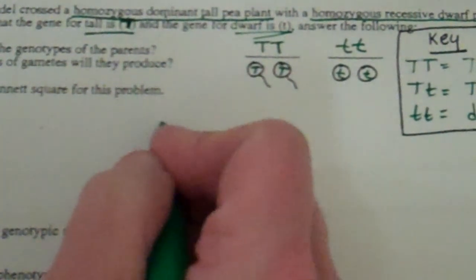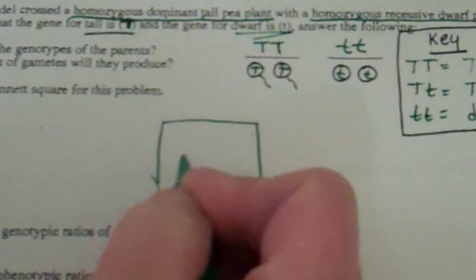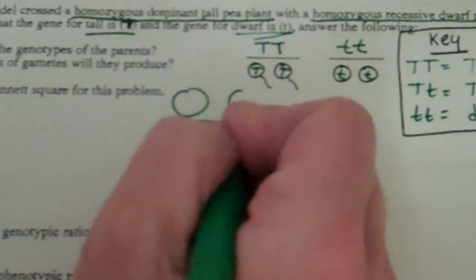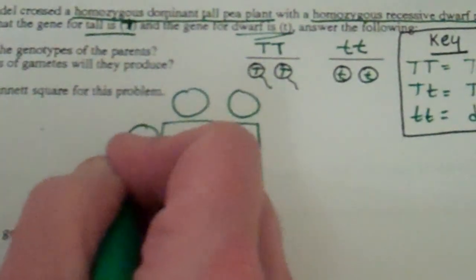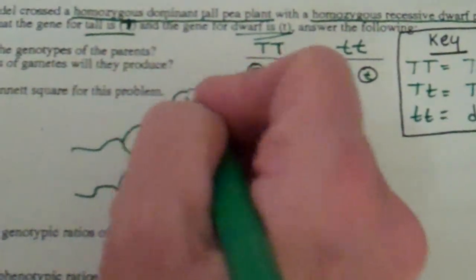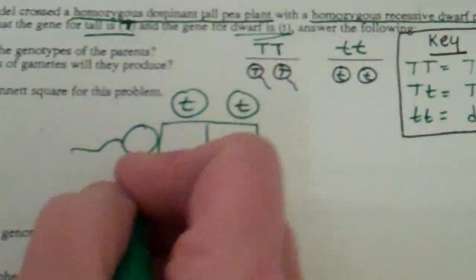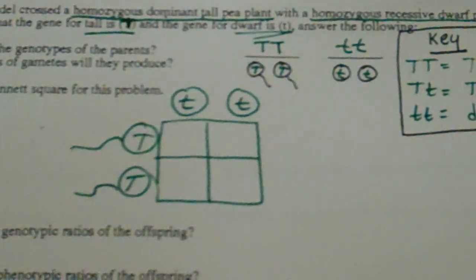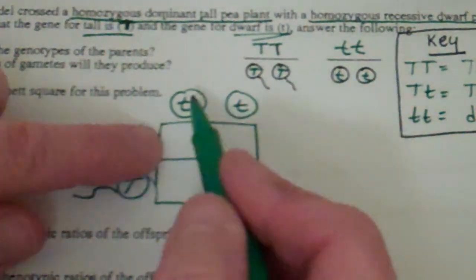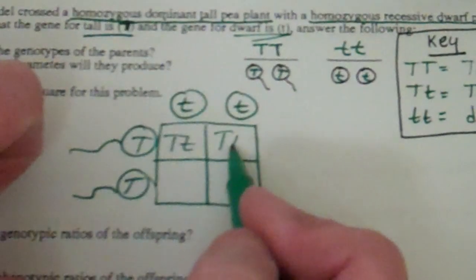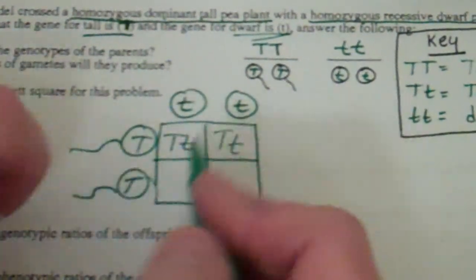Set up our Punnett square. Make your square nice and big enough so I don't have to squint. Put our sex cells, I like to make them really big so I can read what's in them. My egg cells are little t little t, my sperm cells are big T big T.